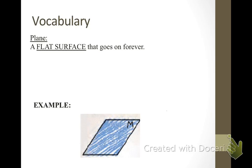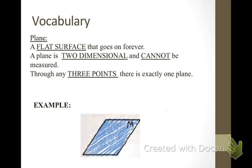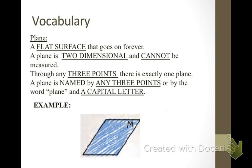The next thing we have is a plane. Think of a plane as a flat surface that goes on forever in every direction. A plane has two dimensions, length and width, but it cannot be measured because it goes on forever. Through any three points, there is exactly one plane, and that is what we use to name a plane. We name a plane by any three points on the plane or by the word plane and a capital letter associated with the plane.